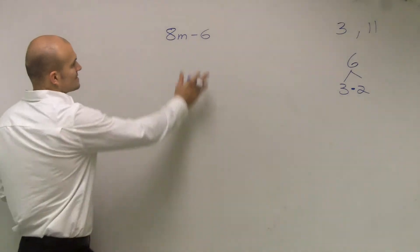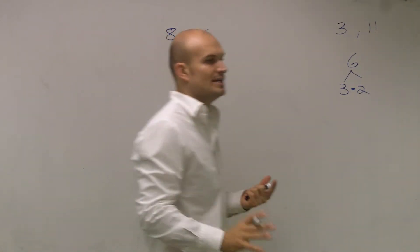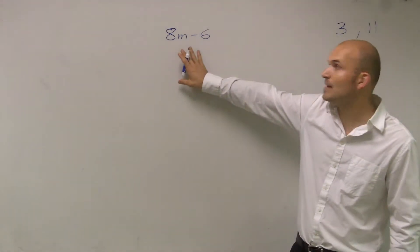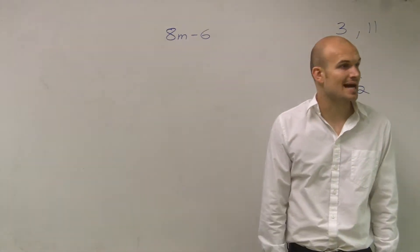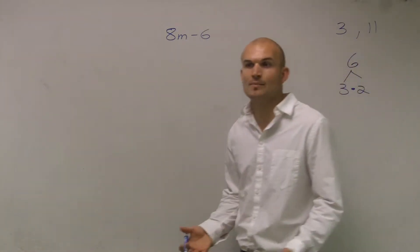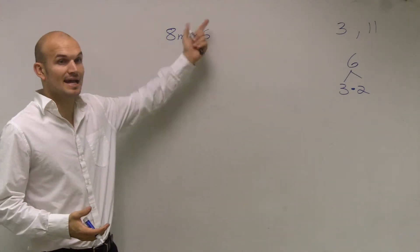So that's going to lead us into, here we have a problem, 8m minus 6. Now initially, we need to remember about adding and subtracting like terms. We cannot combine 8m minus 6. It does not equal 6m, it does not equal 6, it does not equal m.